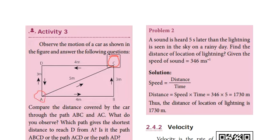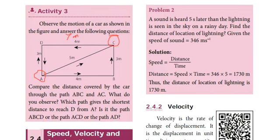If you want to see the distance, it's 3 plus 4 equals 7 meters. What is the displacement? 5 meters. So the distance and displacement are different. The distance is 7m and the displacement is 5m.